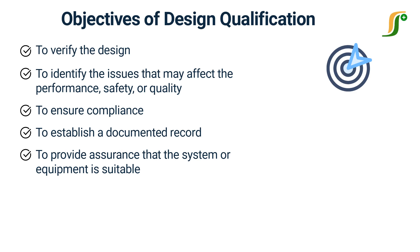Design qualification is an important part of the overall validation process in regulated industries, and it helps to ensure that systems and equipment are designed and built to meet the desired performance and quality requirements before they are commissioned and used in actual production or service environments.